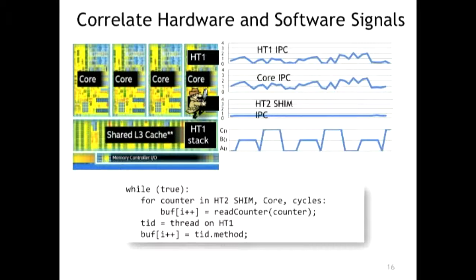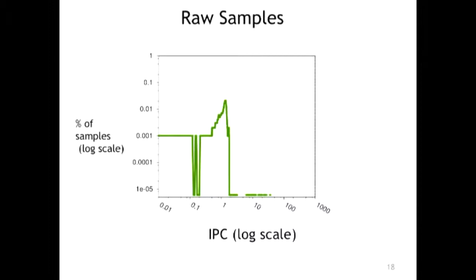Here's the problem: when you sample at high frequency, noise becomes much, much stronger than at low frequency. How can you filter out data you can't trust? Looking at raw samples, if X is IPC and Y is percentage of samples — on this machine the maximum IPC you can get is four instructions per cycle. But naively sampling at high frequency, you'll see values that look like the CPU is retiring 10 instructions per cycle.